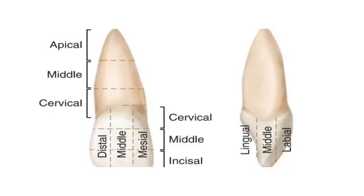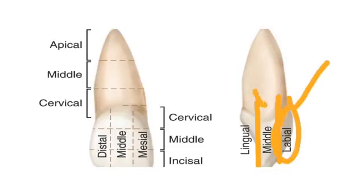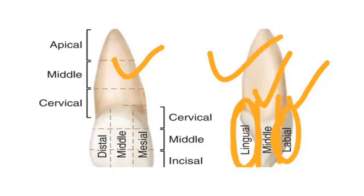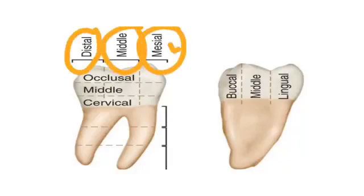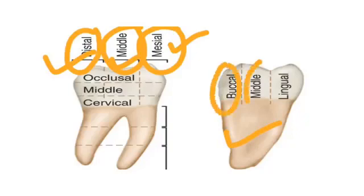The same applies to the mesial and distal surfaces. If a vertical division is imagined, the third nearer to the labial surface is the labial third, the middle one is the middle third, and the third nearer to the lingual surface is the lingual third. All this division is in case of anterior tooth. In case of posterior tooth, in labial and lingual surface, the thirds are named similarly as mesial, middle, and distal. But in mesial and distal surfaces, the thirds are the buccal, middle, and lingual.